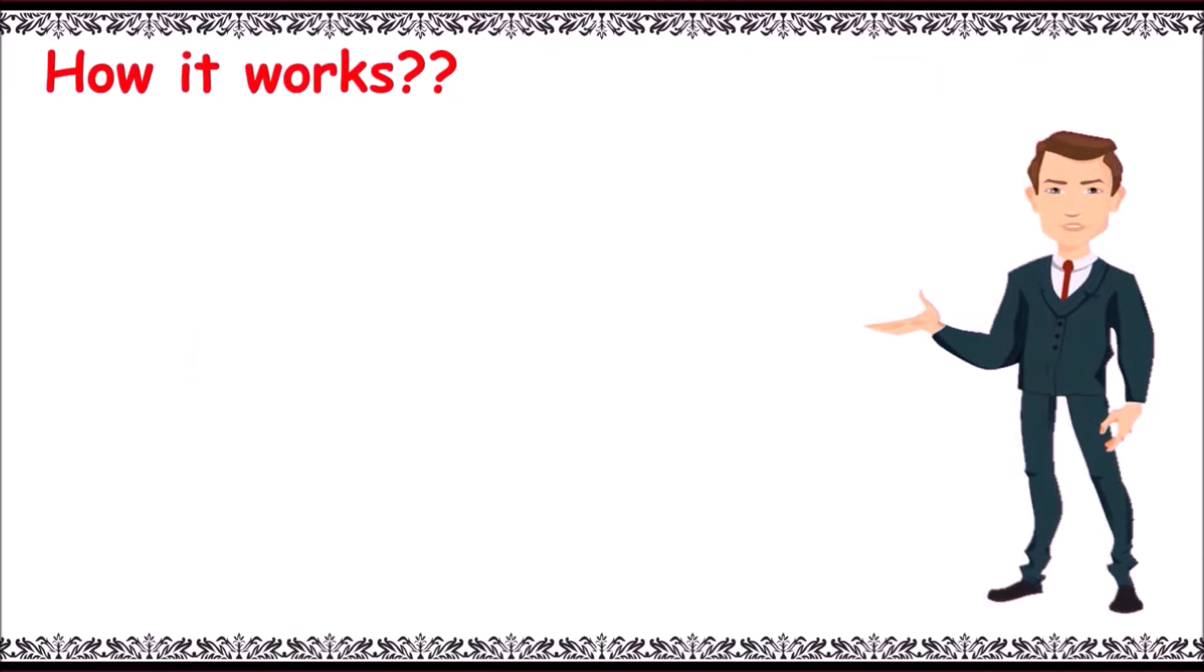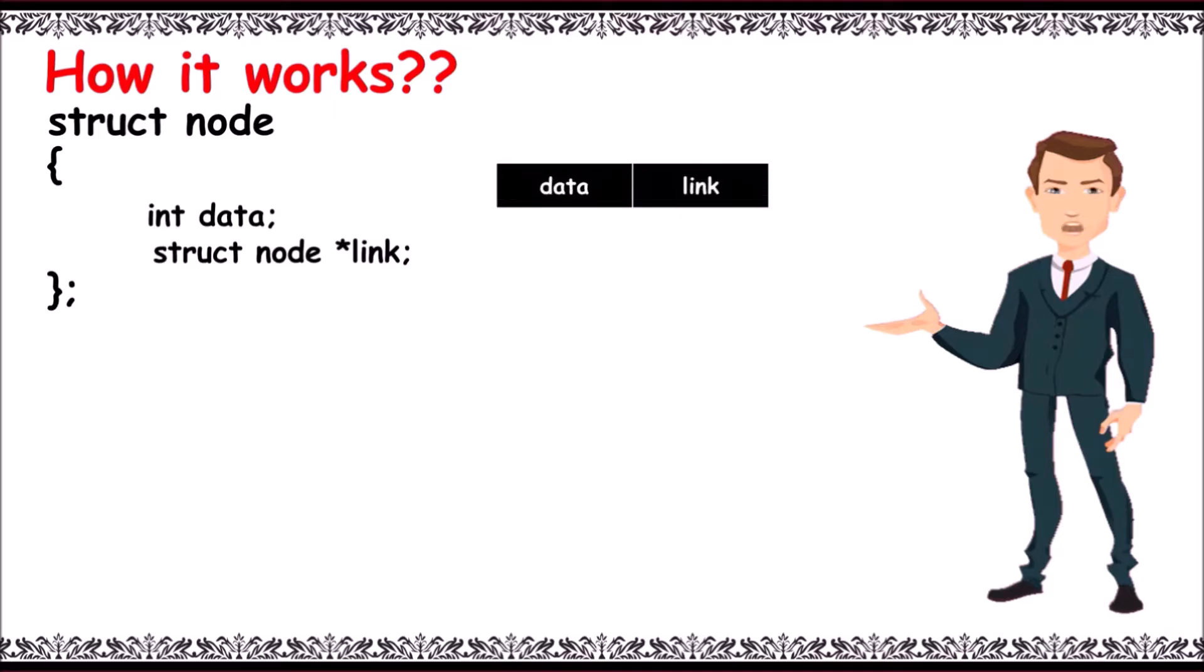How this concept works: Consider a structure node. On declaring a node, it contains two fields - one is data and the other is link. Declare a structure variable: struct node a. Variable a is declared with two empty fields.